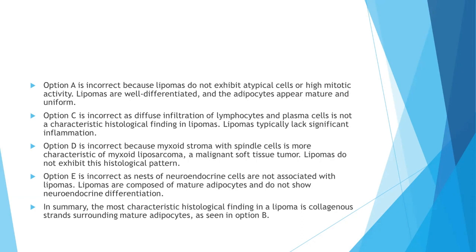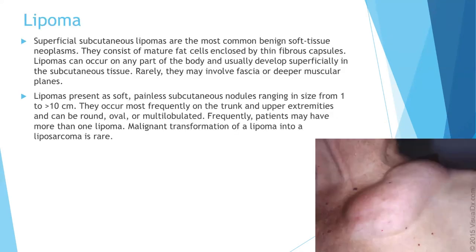In summary, the most characteristic histological finding in a lipoma is collagenous strands surrounding mature adipocytes, as seen in option B. Superficial subcutaneous lipomas are the most common benign soft tissue neoplasm. They consist of mature fat cells enclosed by thin fibrous capsules and can occur on any part of the body, usually developing superficially in the subcutaneous tissue. Rarely, they involve fascia and deeper muscular planes.